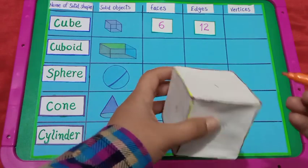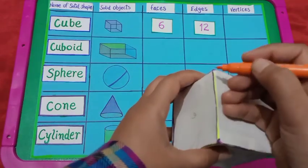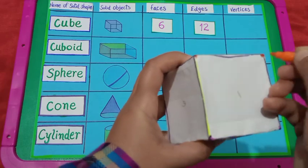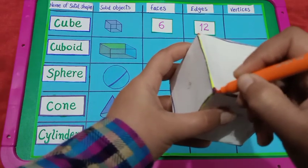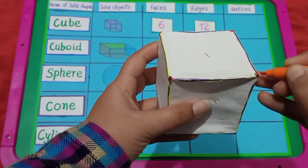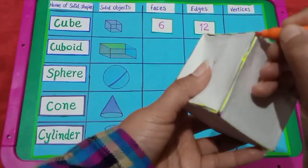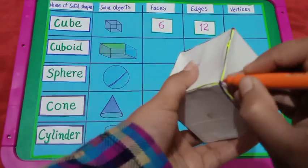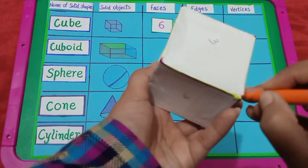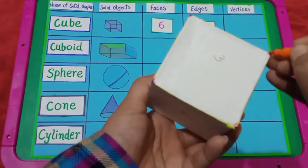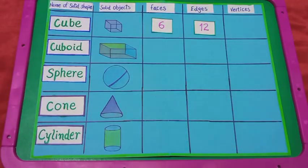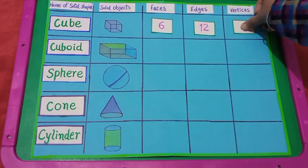Where these edges meet are the vertices of the cube. Let's count its vertices: 1, 2, 3, 4, 5, 6, 7, 8. So, dear students, a cube has 8 vertices.